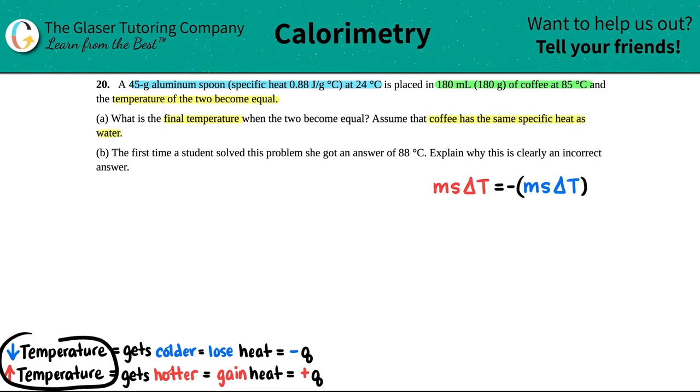The easiest way to figure this out is to just look at what's happening with the temperature. If a temperature is decreasing, it's getting colder and losing heat—the Q is going to be negative. If the temperature is rising, it's getting hotter, you're gaining heat, and the Q is going to be positive.